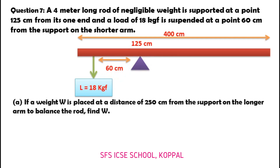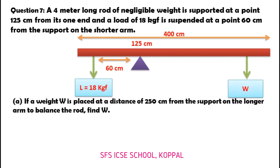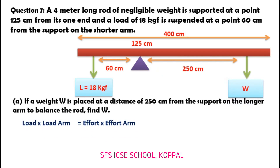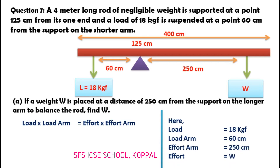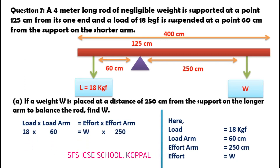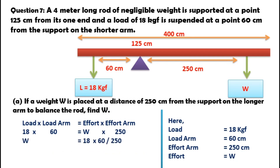Part A: If a weight W is placed at a distance of 250 cm from the support on the longer arm to balance the rod, find W. Using load times load arm equals effort times effort arm — load is 18 kgf, load arm is 60 cm, effort is W, effort arm is 250 cm. So 18 into 60 equals W into 250, giving W equal to 18 into 60 divided by 250, which is 4.32 kgf.